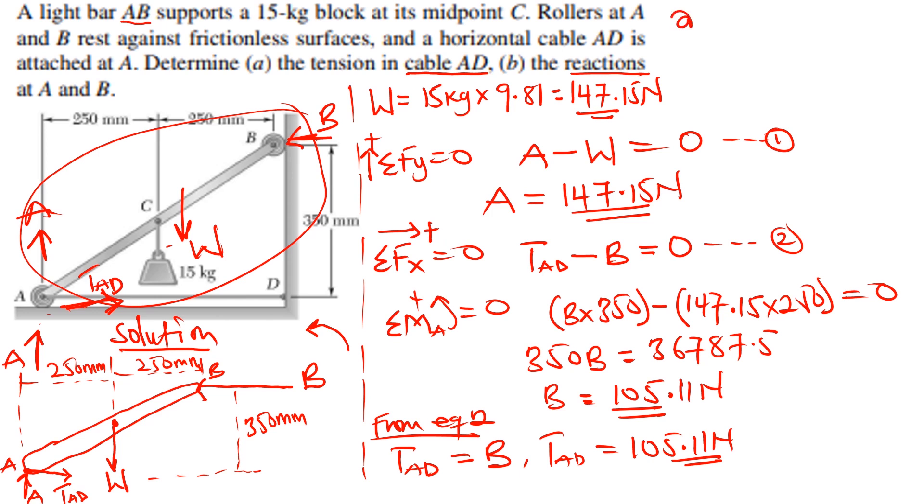This answers the question for the tension. So we can conclude that A, the tension in cable AD is 105.11 newton and B, we have the reactions at A, which is 147.15 newton and reaction at B is also 105.11 newton. Thank you for watching this simple episode and trying to stay with us. Kindly subscribe to the channel, like and check out for the next episode. Thank you.